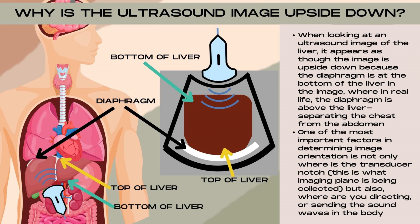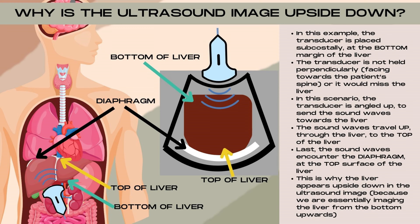We can angle the probe multiple different ways to send the sound waves at a different angle through the body. In this example, the transducer is placed subcostally at the bottom margin of the patient's liver, in a transverse plane with the transducer notch pointed towards the patient's right side of the body. Note that the transducer is not held perpendicular — if it was, the sound waves would be directed straight down and we would completely miss the liver.